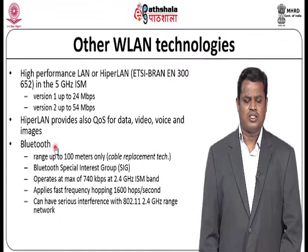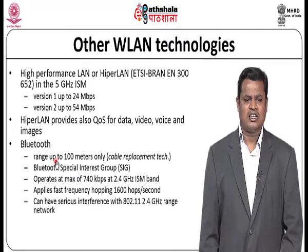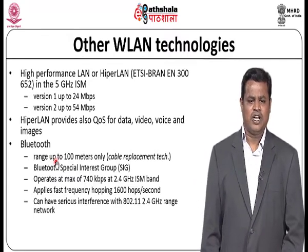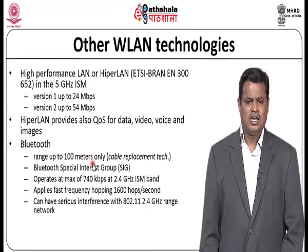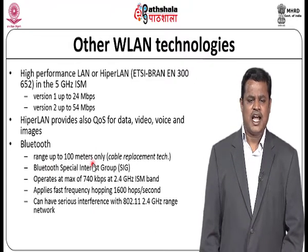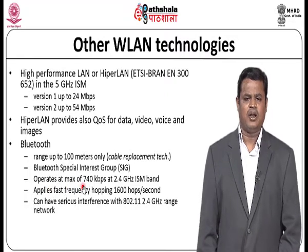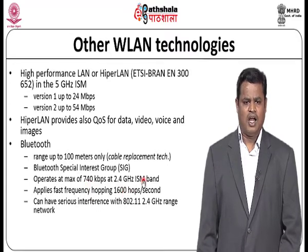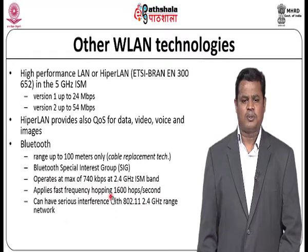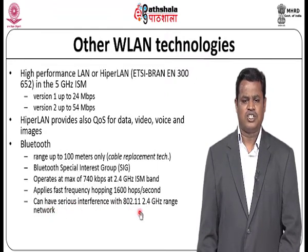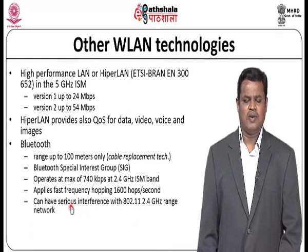Another WLAN technology is Bluetooth. Bluetooth has different characteristics compared to WLAN — it ranges up to 100 meters only, which is why it is used in mobile phone applications for transferring data within a shorter distance. The speed is only 740 Kbps compared to WLAN's Mbps, operating at the 2.4 GHz ISM band. Bluetooth applies fast frequency hopping at 1600 hops per second. It can cause serious interference with 802.11 2.4 GHz range devices, affecting the transfer rate and corrupting data during transmission.